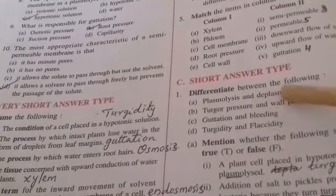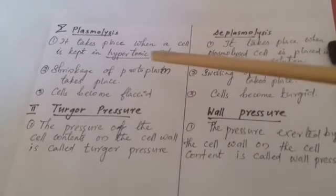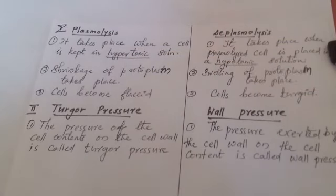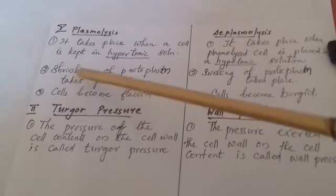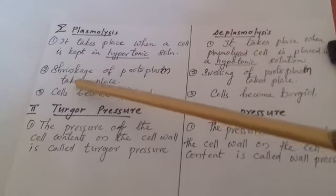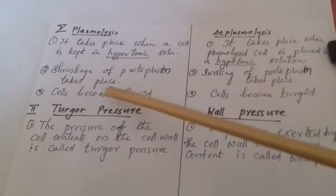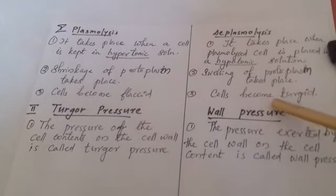Now differentiating between the following. First: plasmolysis and deplasmolysis. Plasmolysis takes place when a cell is kept in hypertonic solution. Deplasmolysis takes place when a plasmolyzed cell is placed in hypotonic solution. Shrinkage of protoplasm takes place in plasmolysis; swelling of protoplasm takes place in deplasmolysis. Cells become flaccid in plasmolysis; cells become turgid in deplasmolysis.